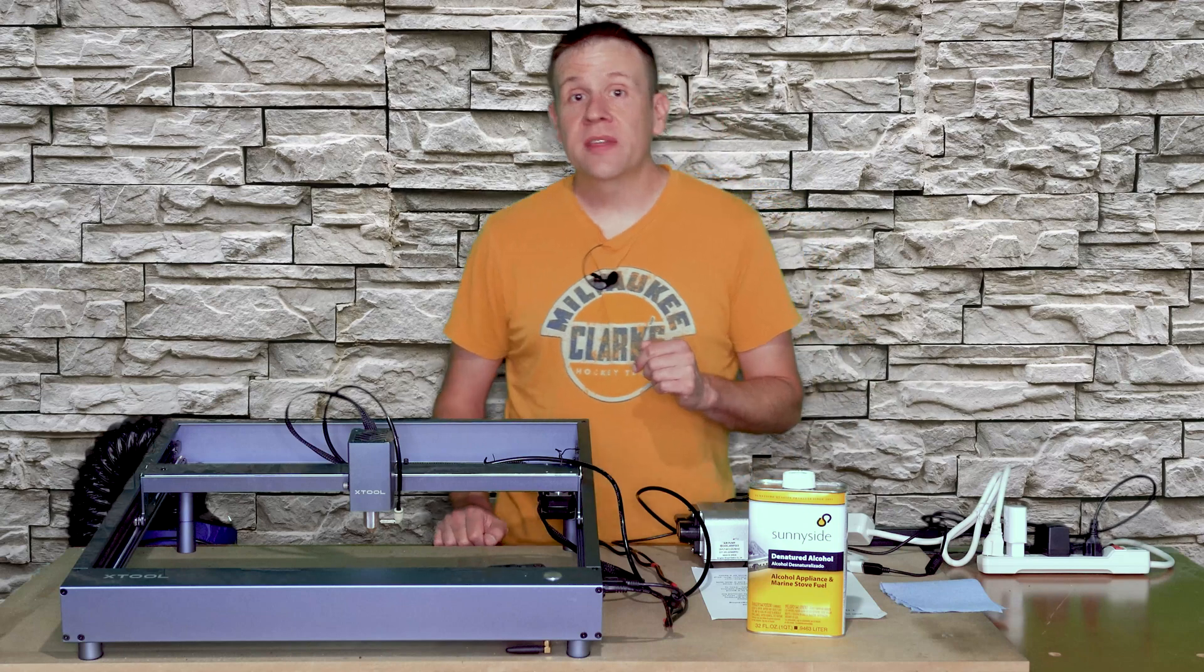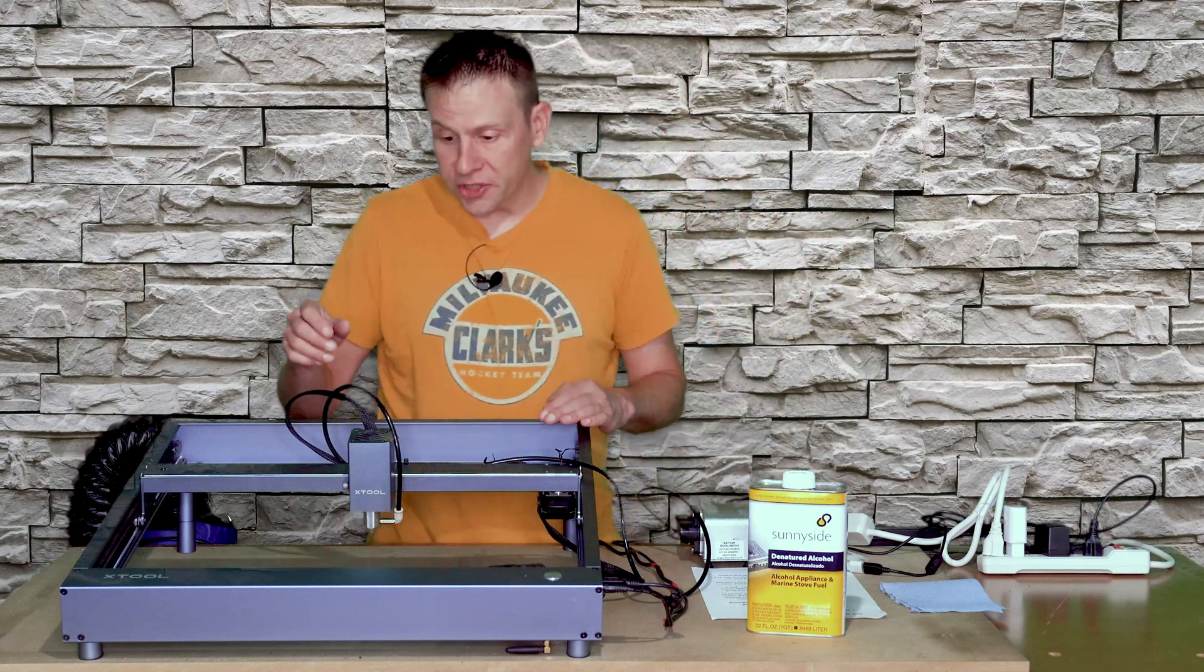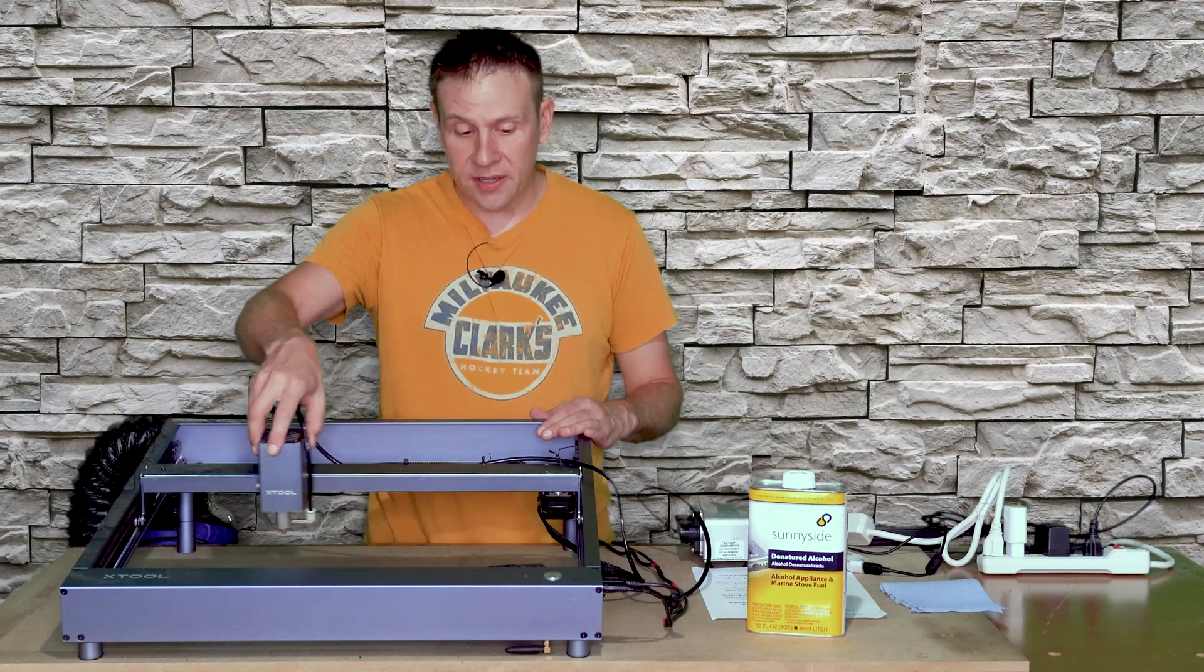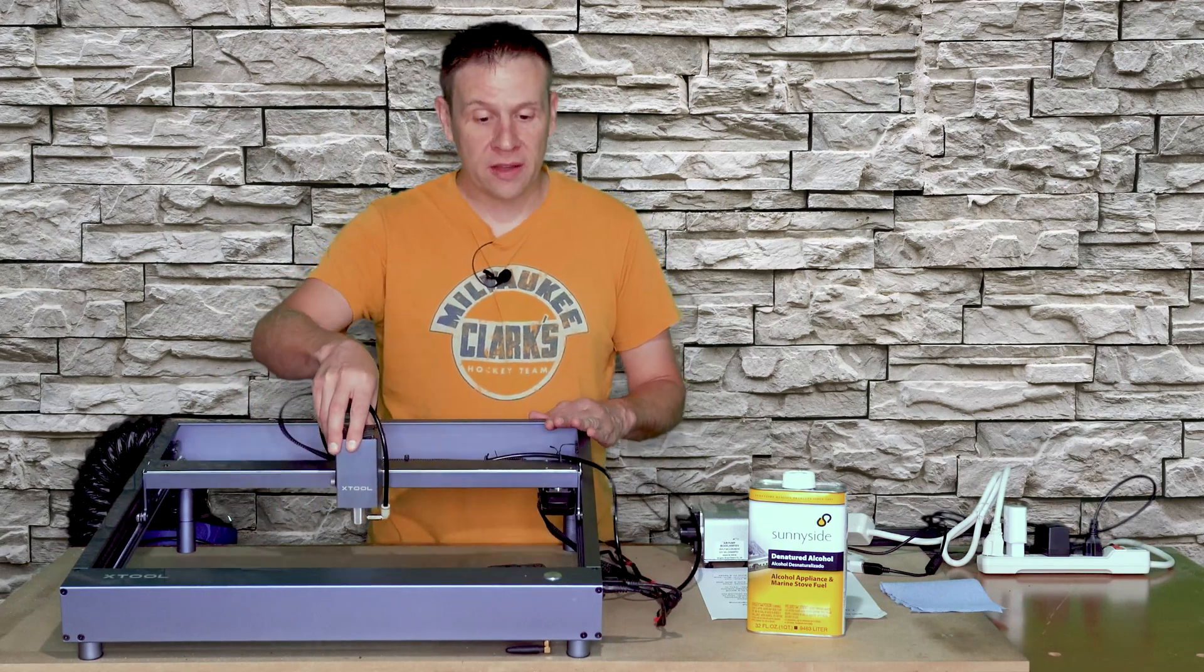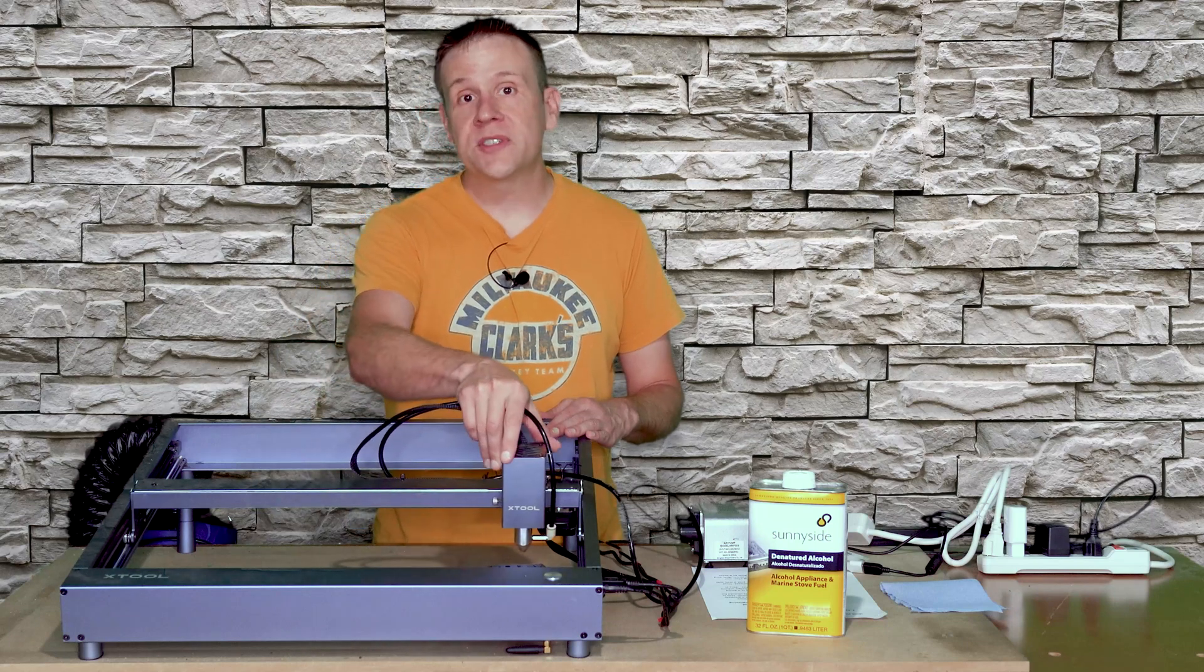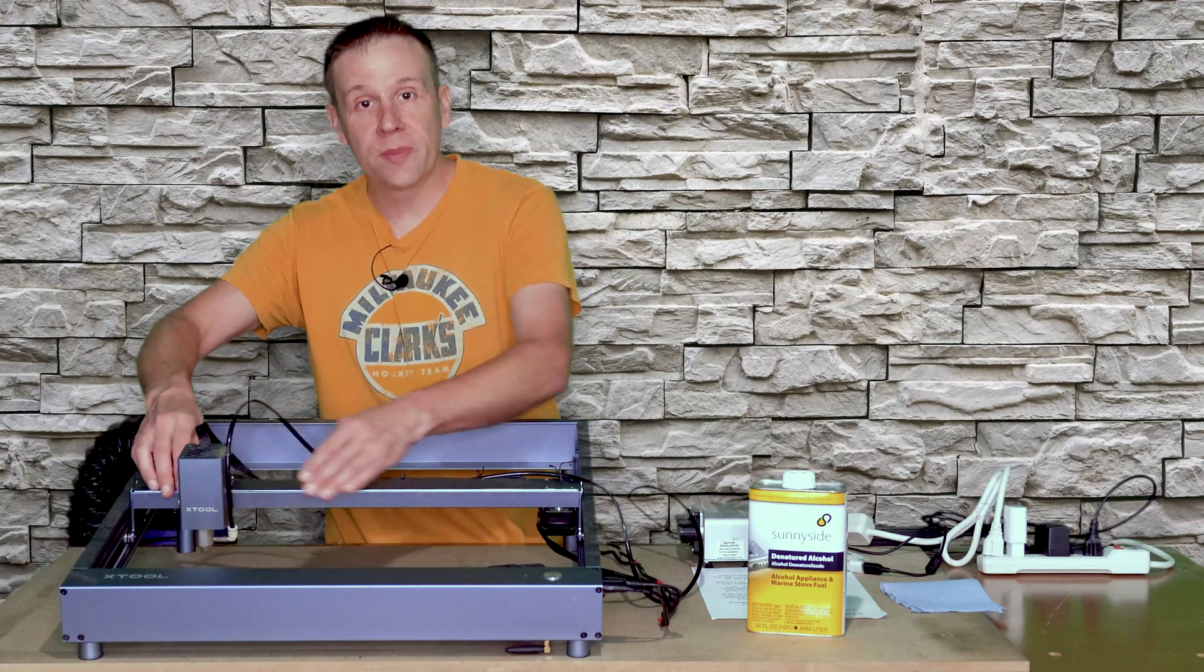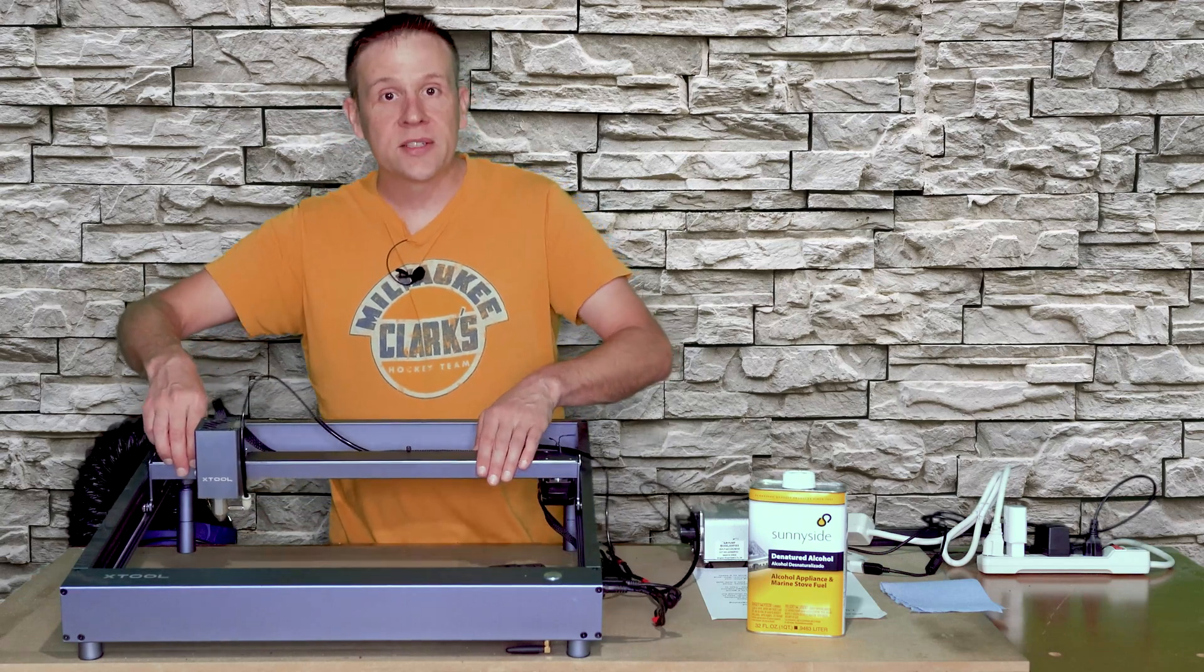First thing we're going to check are the gantry rails and what I mean by the gantry rails on your D1 machine is the rails that the machine can move back and forth on. We want to ensure that these move freely and that there's no sticking points or gummy points. It should feel smooth and consistent from end to end on both sets of tracks.